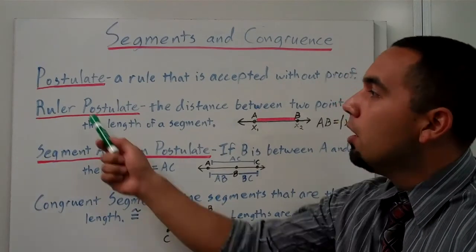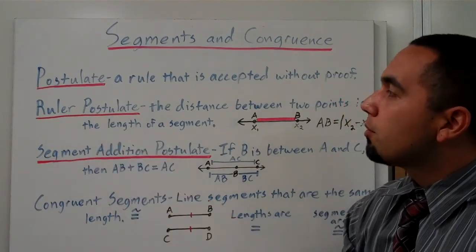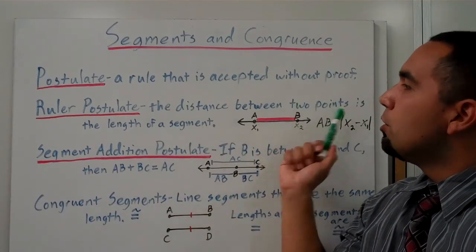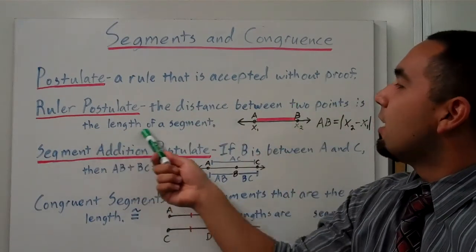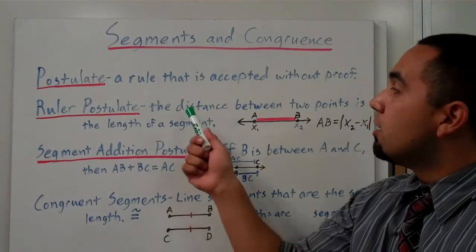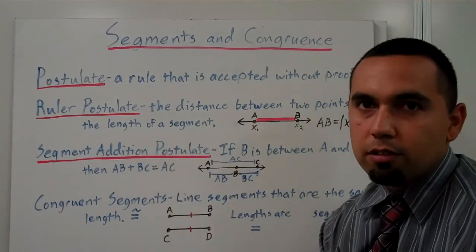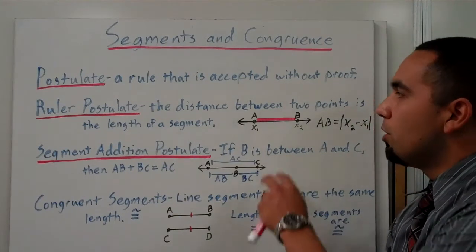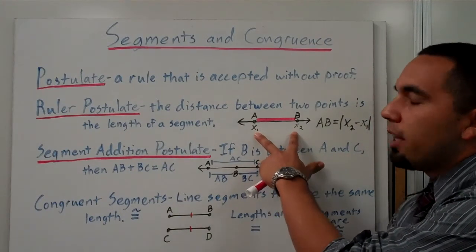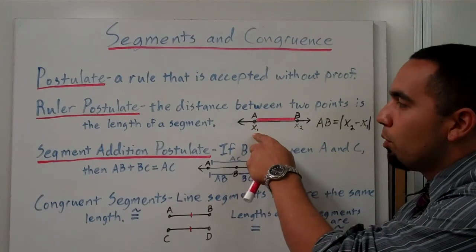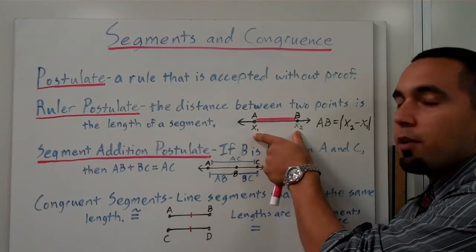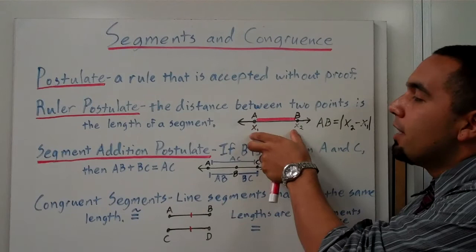Ruler postulate - this is the distance between two points is the length of a segment. Let me say that again: the distance between two points is the length of a segment. Something real simple. How do you measure something? If we wanted to measure the length of AB, we would put our ruler at A and just measure to B, right?